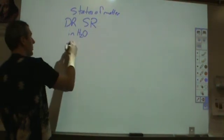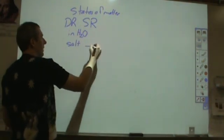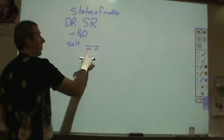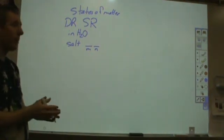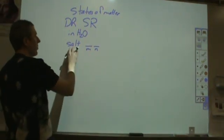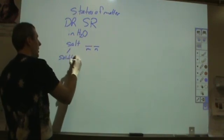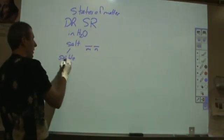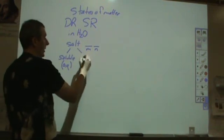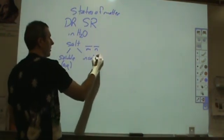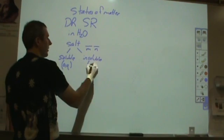So for those, anytime you have a salt where you have a metal and a non-metal or one of those replaced by a polyatomic ion, you're going to look up whether that salt is soluble. If that salt is soluble in water, you're going to write down the state of matter as being aqueous. If it's insoluble, then you're going to write down solid.